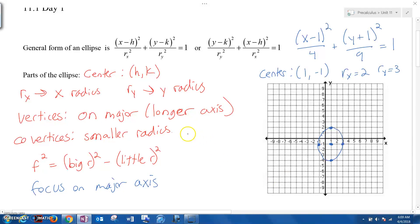Now we call the vertices, I'll do that right here, the vertices are the ones that are on the major axis. So in this case, the longer axis is up and down. So these points are my vertices. My vertices are (1, 2) and (1, -4).